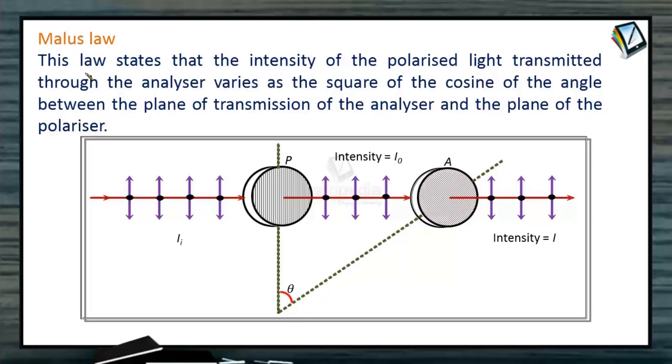So Malus law, or law of Malus, this law states that intensity of the polarized light transmitted through the analyzer varies as the square of the cosine of the angle between the plane of transmission of analyzer and the plane of polarizer.